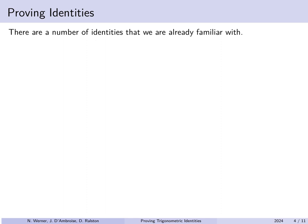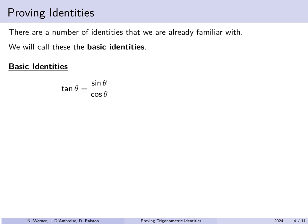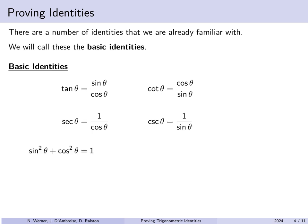The basic identities we already know include: tangent theta equals sine theta over cosine theta; cotangent theta equals cosine theta over sine theta; secant theta equals 1 over cosine theta; and cosecant theta equals 1 over sine theta. We also have the Pythagorean identity sine squared theta plus cosine squared theta equals 1. Dividing by cosine squared theta gives tan squared theta plus 1 equals secant squared theta, and dividing by sine squared theta gives 1 plus cotangent squared theta equals cosecant squared theta.